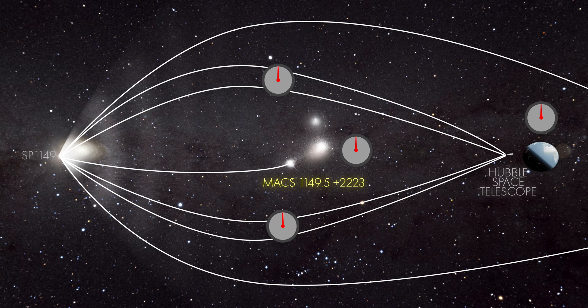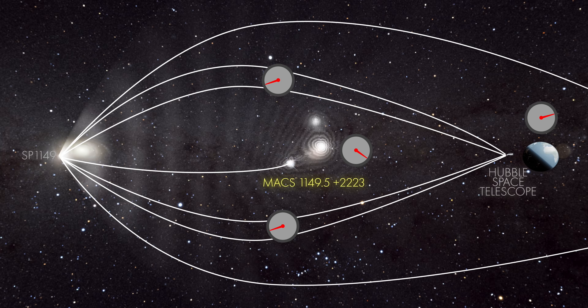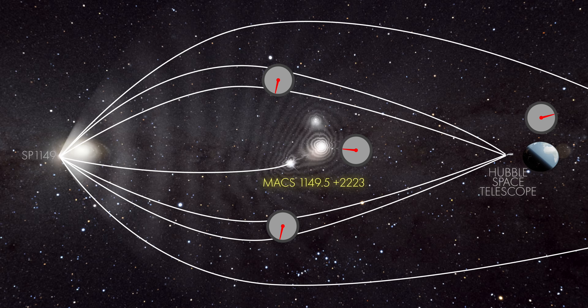Light passing through curved spacetime appears to travel more slowly relative to an external observer. This is much less intuitive, but it's a well-established and well-tested part of general relativity.